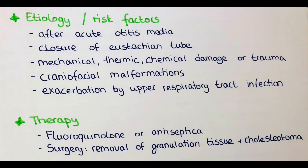So how do we treat a patient with chronic suppurative otitis media? Initially, a fluoroquinolone antibiotic or another antiseptic agent is given for two weeks to improve the outflow of secretions and reduce the chronic inflammation with medication. But sometimes it is necessary to perform surgery.